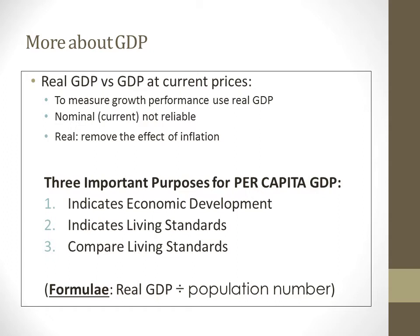There are three important purposes for GDP per capita — GDP per head or per person. First, it indicates economic development. Second, it indicates living standards. Third, it compares living standards between countries. These make sense because economic development relates to the overall standard of living of people within a country. The formula is: real GDP divided by population.